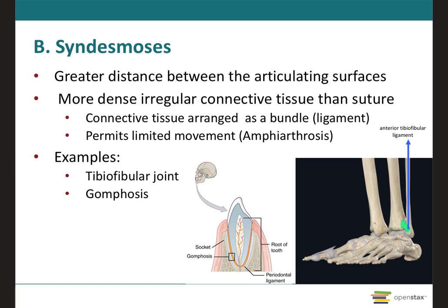The next type of fibrous joint is the syndesmosis, where 'syndesmo' means band or ligament. It differs from a suture by having a greater distance between the two articulating bones and therefore a more dense irregular connective tissue arranged in a bundle between them, permitting limited movement — considered an amphiarthrosis. One example is the distal tibial-fibular joint, where the anterior tibial-fibular ligament connects the tibia and fibula. Notice how this ligament is broader compared to a suture.